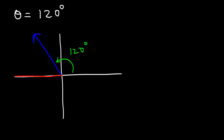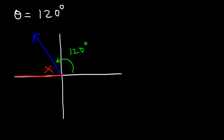The reference angle is always less than 90 — it's between 0 and 90. To find that angle, we know if this angle is 180 and this is 120, it has to be the difference between the two. So it's 180 minus 120, and so this angle is 60. And that's the reference angle.